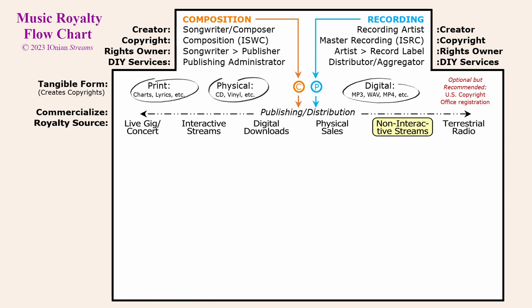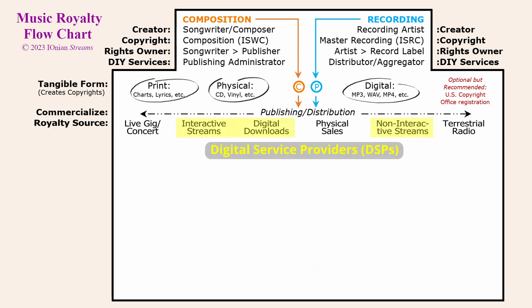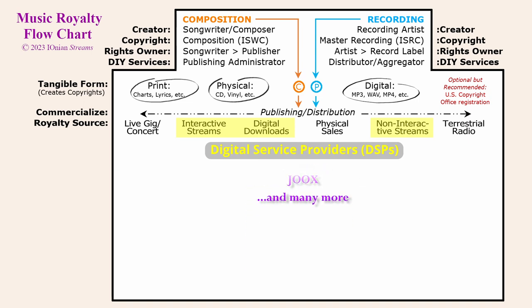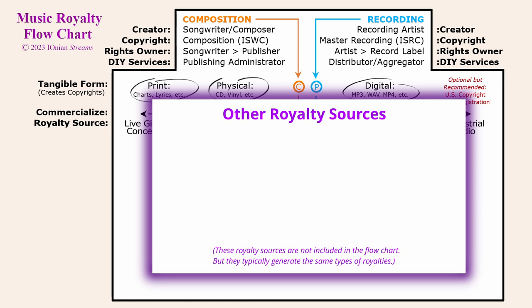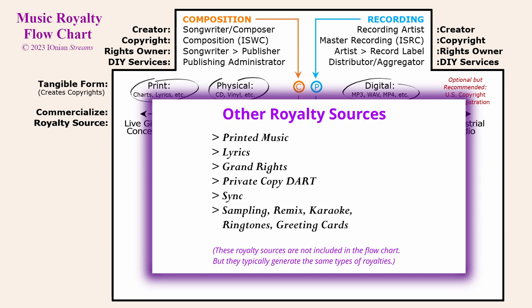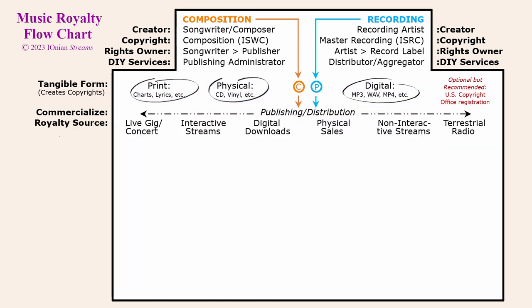Streaming on non-interactive services like SiriusXM Radio and business establishment music sources like Mood Media are also important sources. In today's predominantly digital world, the digital service providers (DSPs) like Spotify, YouTube, Apple Music, Pandora, and many others are important distribution channels, accounting for most of the royalty sources. There are also other less obvious sources not shown on the chart — print royalties, lyrics royalties, grand rights for music in dramatic performances like operas and musicals, private copy DART royalties on blank CDs, sync royalties for music in film and TV, and sampling, remixes, karaoke recordings, ringtones, and interactive greeting cards.